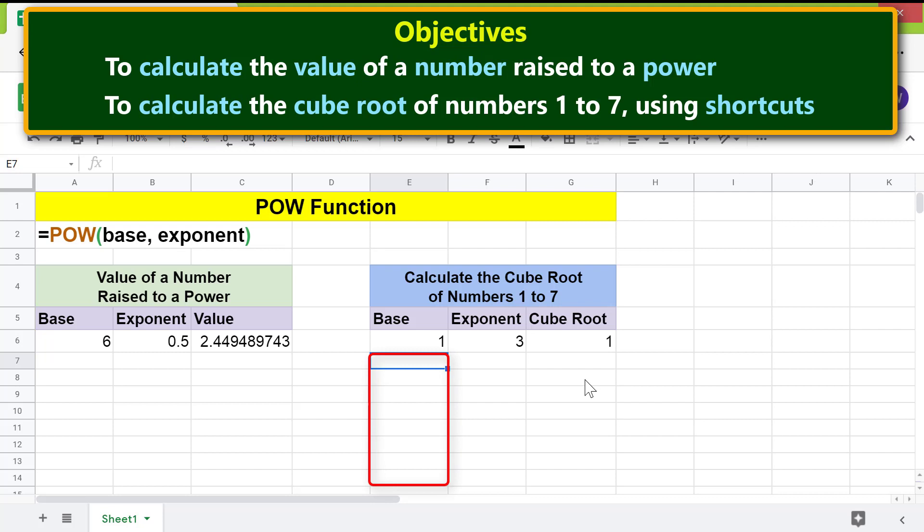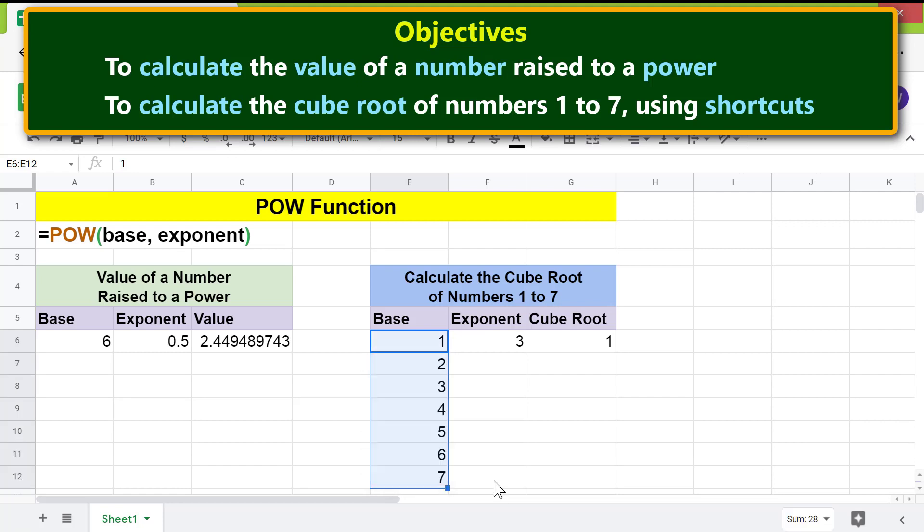Instead of entering each of the numbers 2 to 7 manually, here's a quick and better method. First, click this cell, press and hold the CTRL key, and drag this pointer down these cells to fill them with numbers 2 to 7. Deselect.